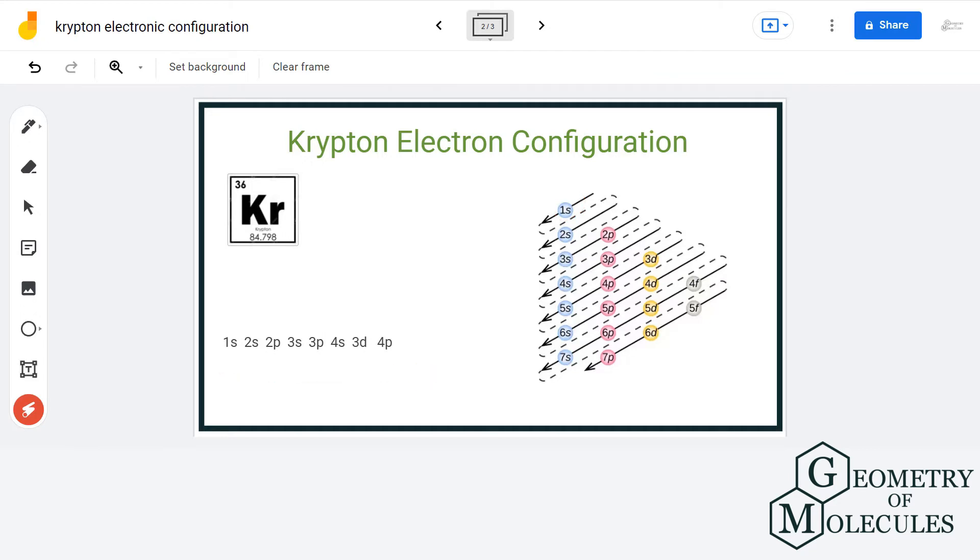The electronic configuration of Krypton is 1s2 2s2 2p6 3s2 3p6 4s2 3d10 and 4p6. If you calculate the number of electrons, the total will be 36.